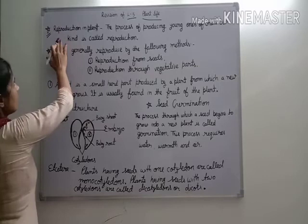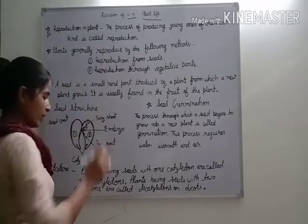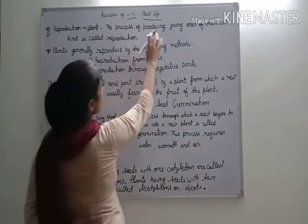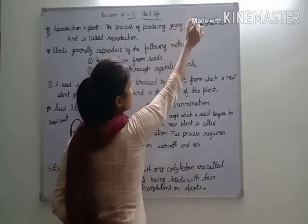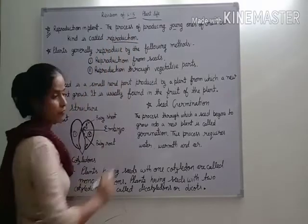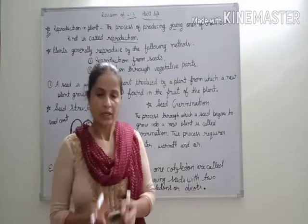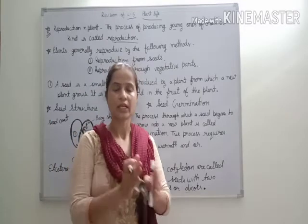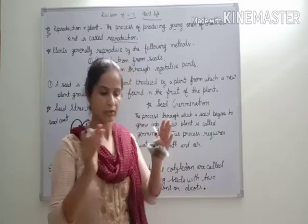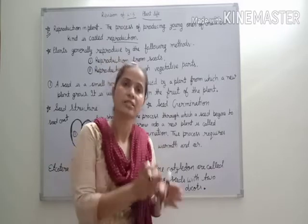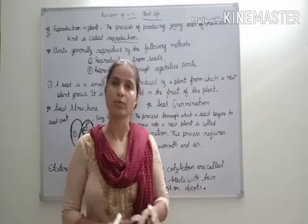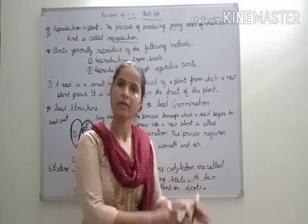First point is reproduction in plant. Plant ke andar reproduction means parjana. The process of producing young ones of one's own kind is called reproduction. Apne hi jaysa young ones pida karne ki jo process hai, usi ko bolte hai reproduction. A plant ka apne hi jaysa plant pida karna is called reproduction in plant.